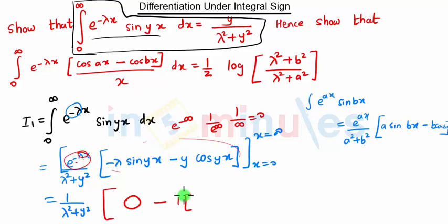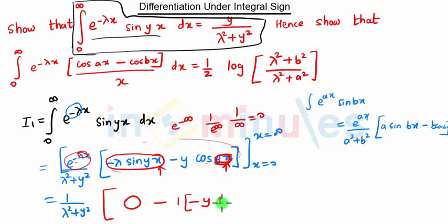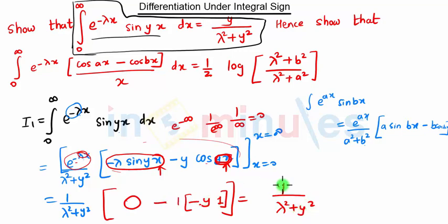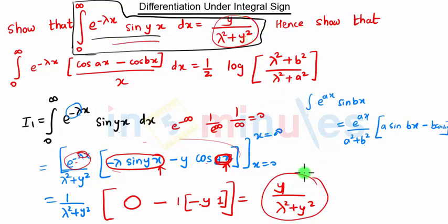At the lower limit x = 0: e^0 = 1, sin(0) = 0, and cos(0) = 1. So we get 1/(λ² + y²) · (−y · (−1)) = y/(λ² + y²). This term matches the required form, so the first part is proved.